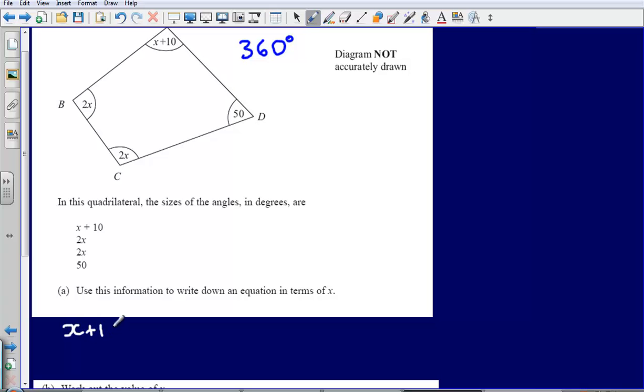plus 2x, plus 2x again, plus 50. We could see that all of these angles added together are going to add up to 360 degrees.